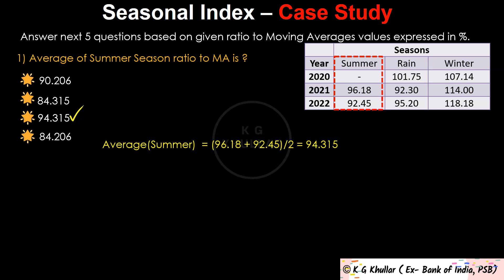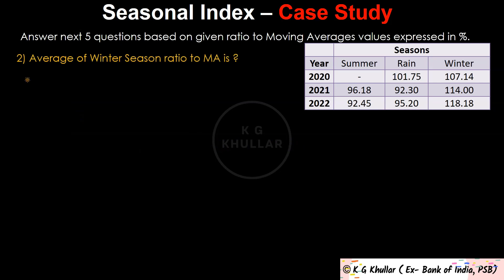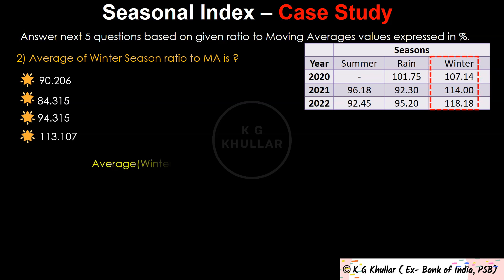The next question is the average of winter season ratio to moving averages. For winter season, the average will be 107.14 plus 114.0 plus 118.18, all divided by 3, which gives 339.832 divided by 3, which equals 113.107. The correct option is option C.